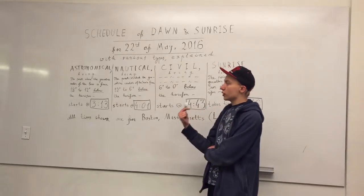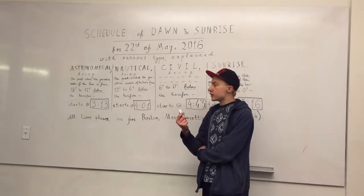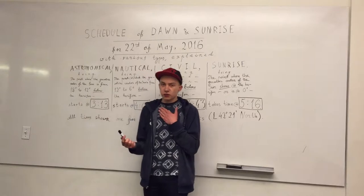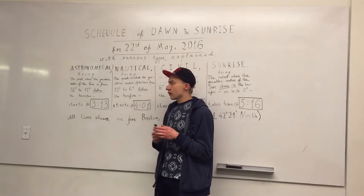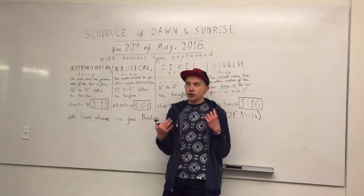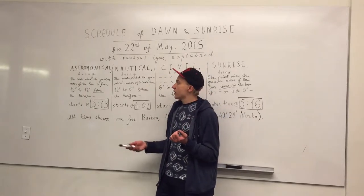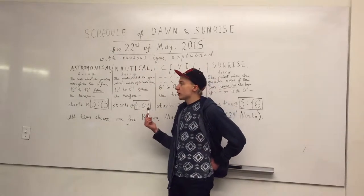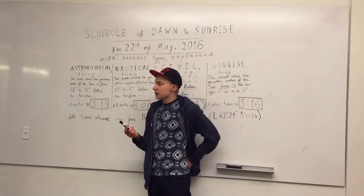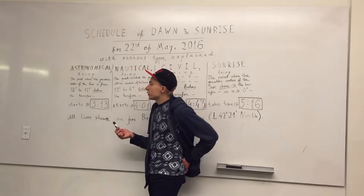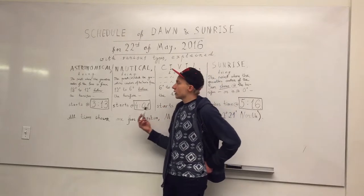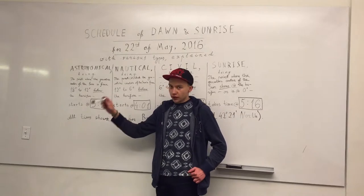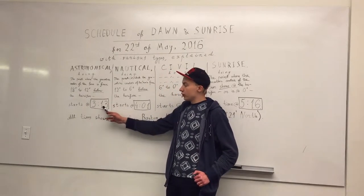Before the astronomical twilight, the actual night happens. But when the sun is at 18 degrees below the horizon, we cannot see it with our naked eye. But astronomers, when they do their observations, can experience some noise with the image of different galaxies and nebulae and so on. Today the astronomical twilight — the point where the sun is 18 degrees below the horizon — was at 3:13 in the morning.